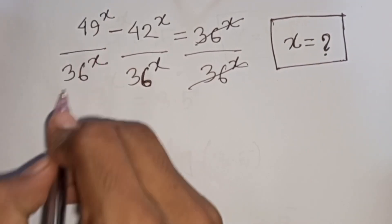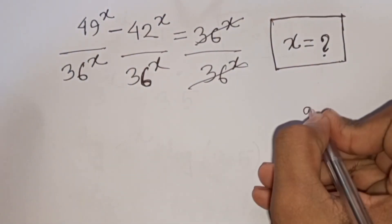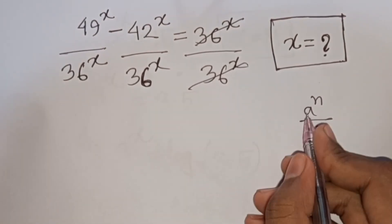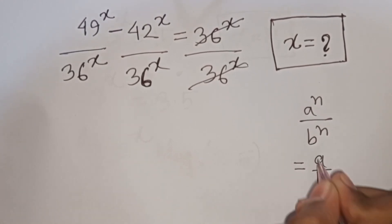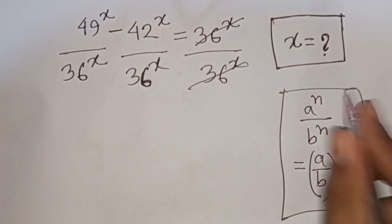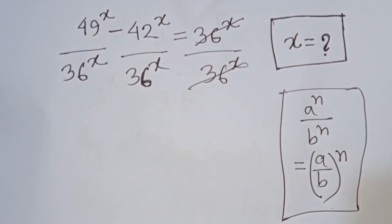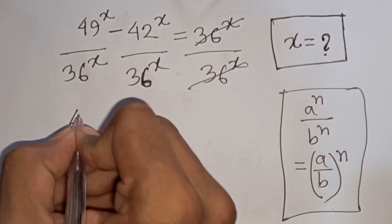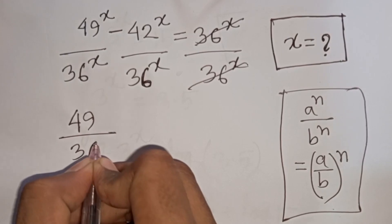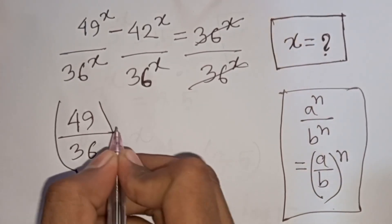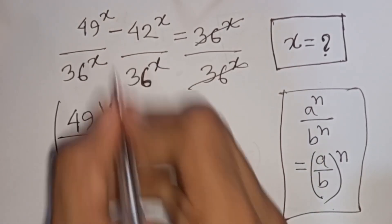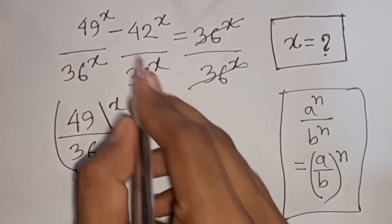Same power but different base. So according to the exponential rule that a power n over b power n is equal to (a/b) to the common power n. So according to this formula, we can write 49 over 36 to the power x.